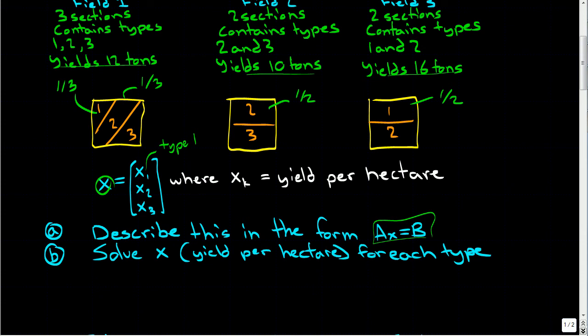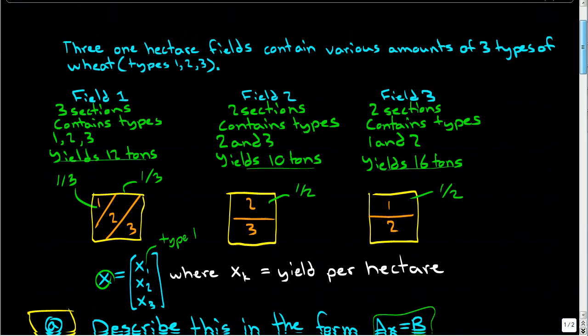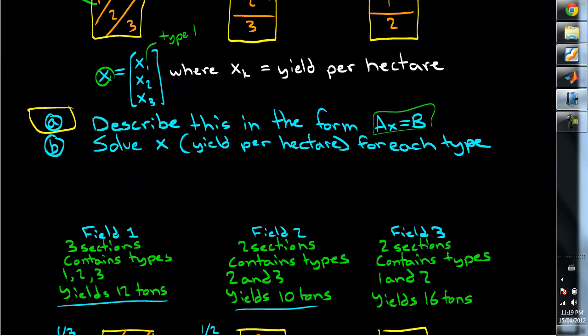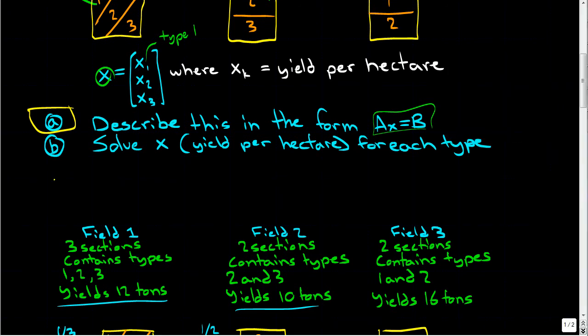In the last video, I covered part A for this question, which was describing this field system where we have three fields, and we described it in the form AX equals B. So in this video, I'm going to cover part B, which is solve for X. We're trying to solve for X, the yield per hectare in tons.